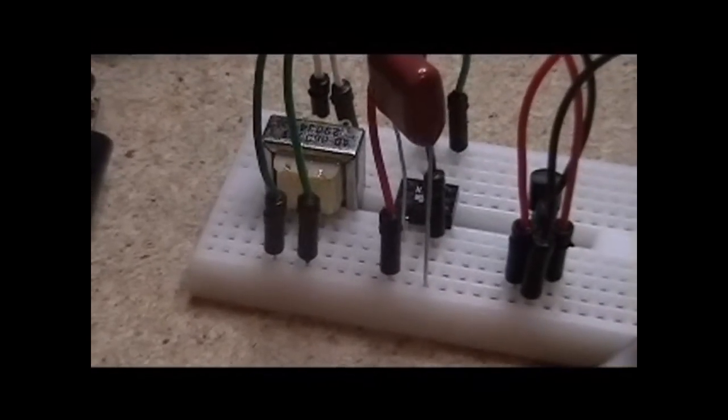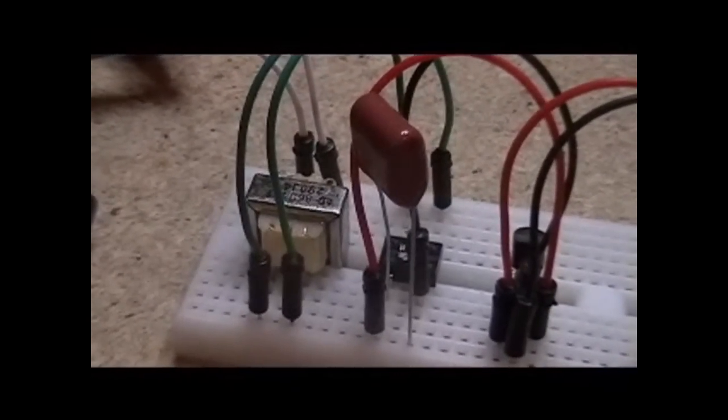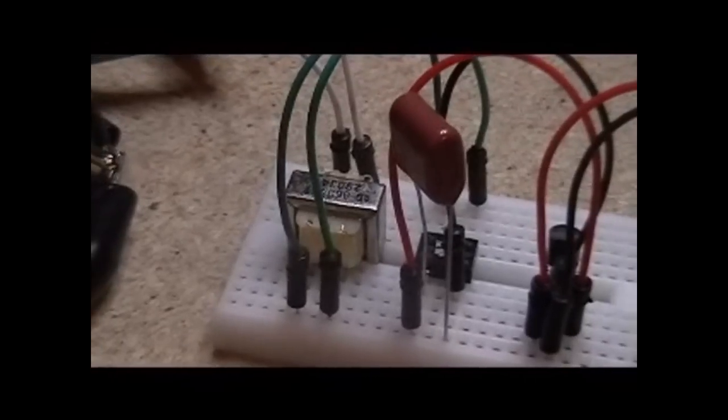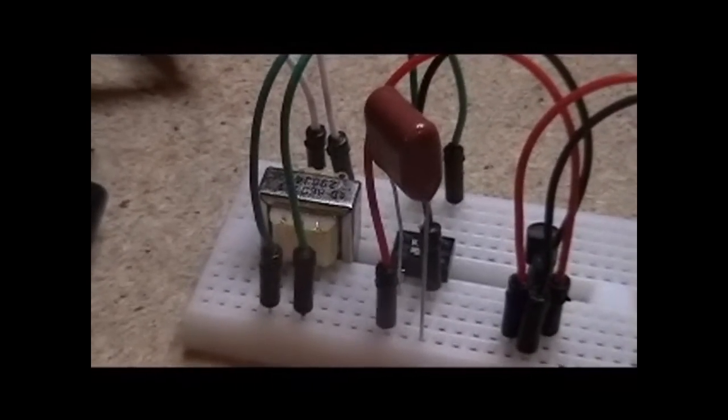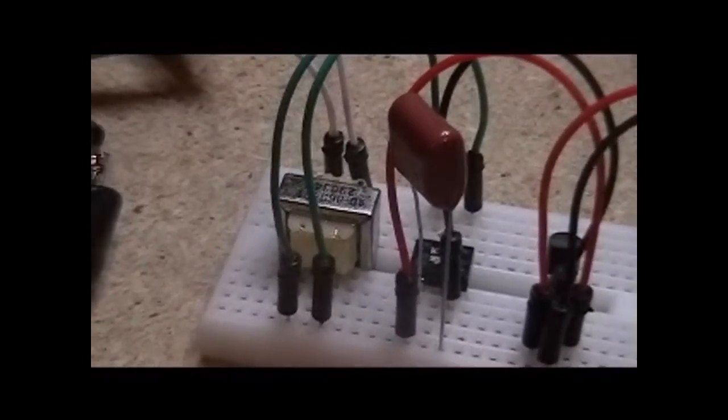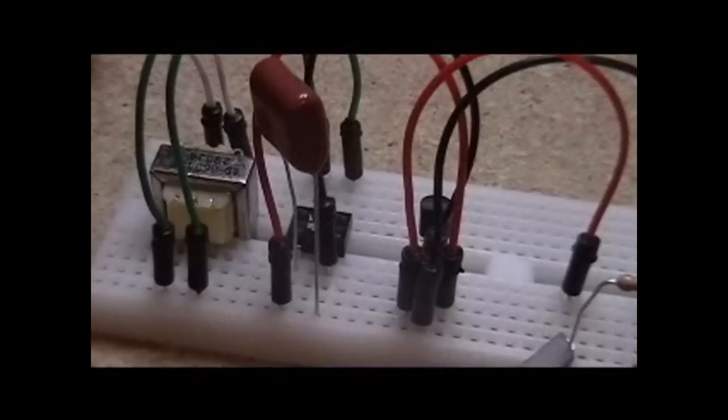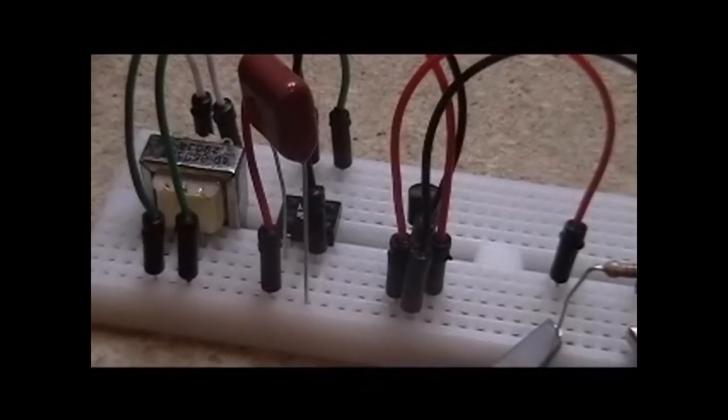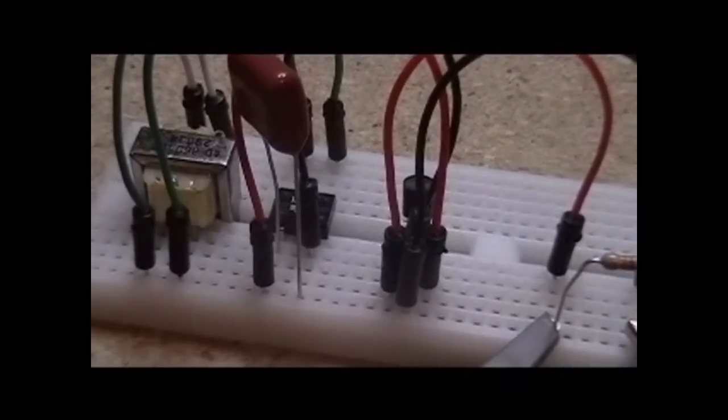Coming out of the rectifier, we use the 1 microfarad capacitor to clean up our signal to carry the voltage across the gaps in the waveform. And then from there, we feed into the 78L05, which is basically cutting it off right at 5 volts.